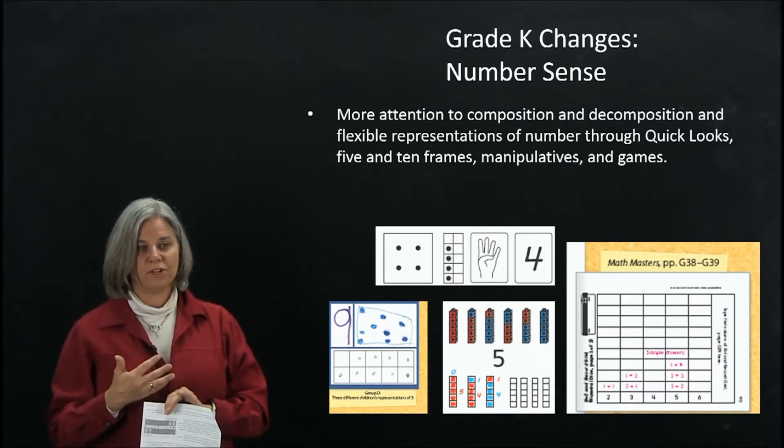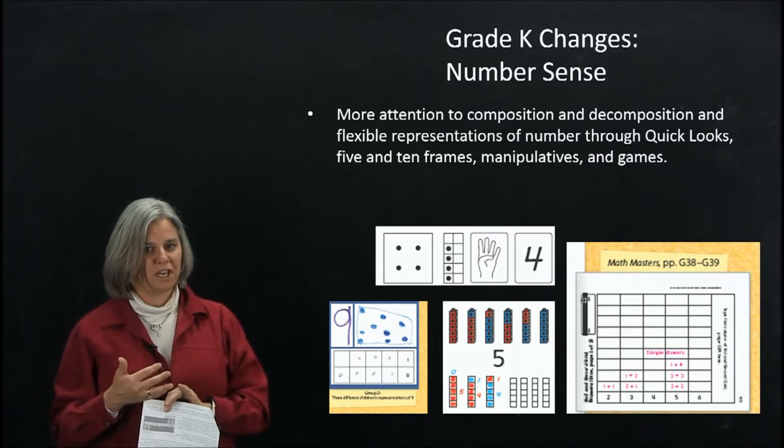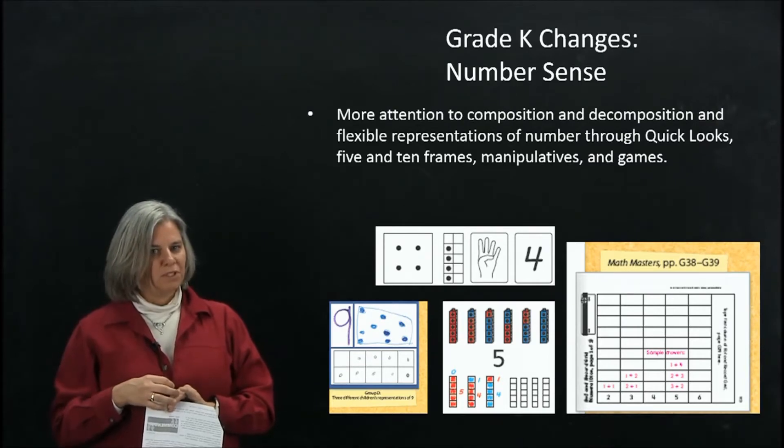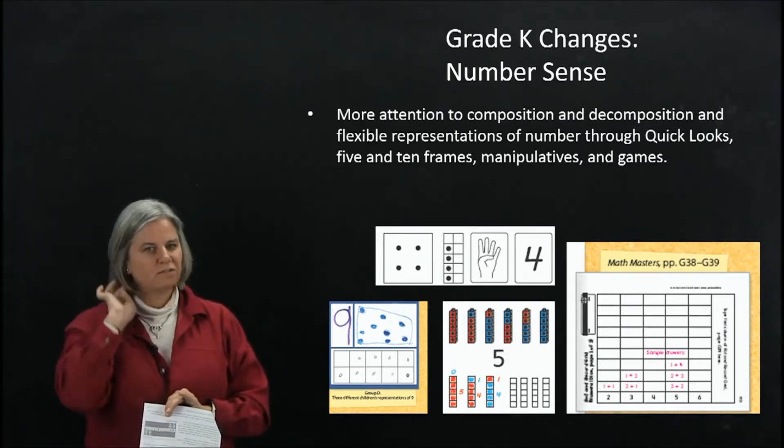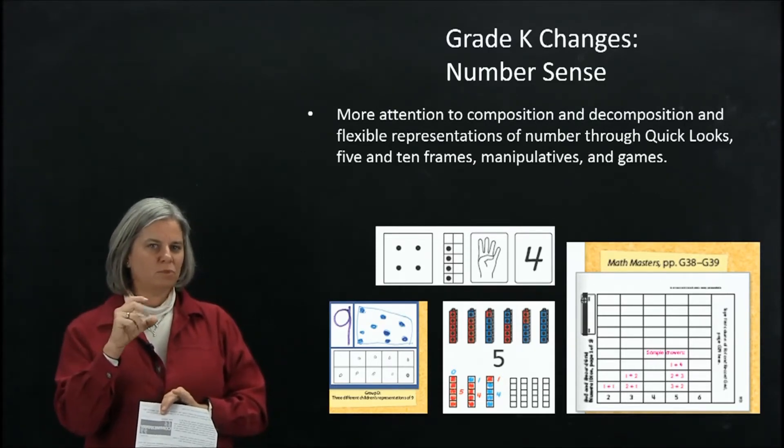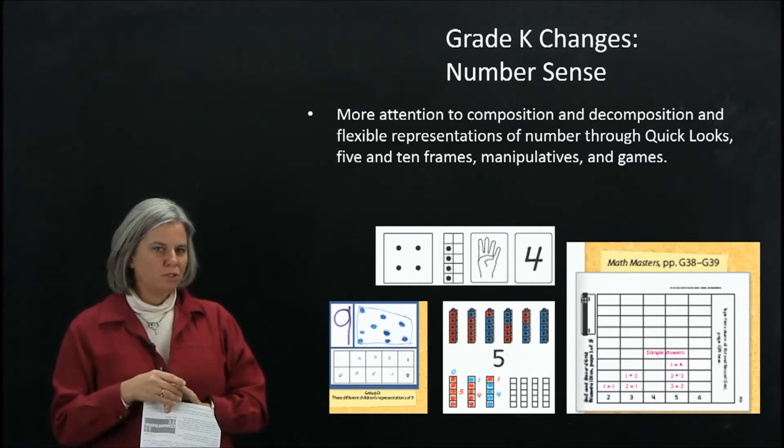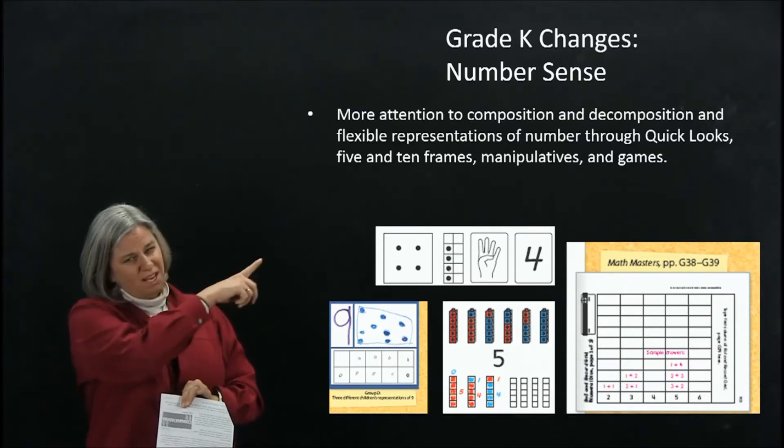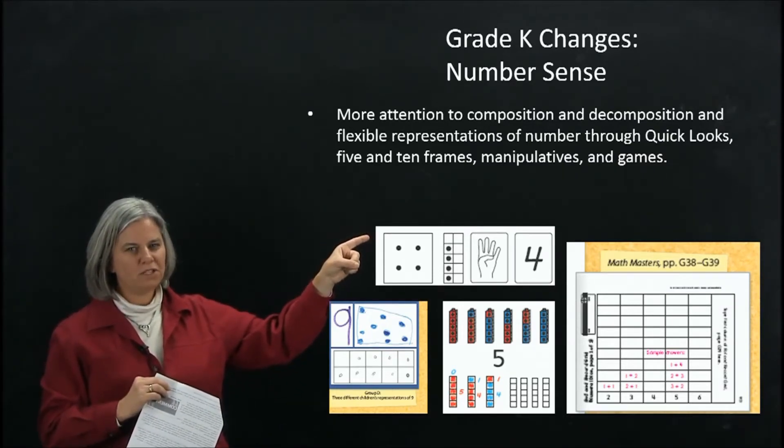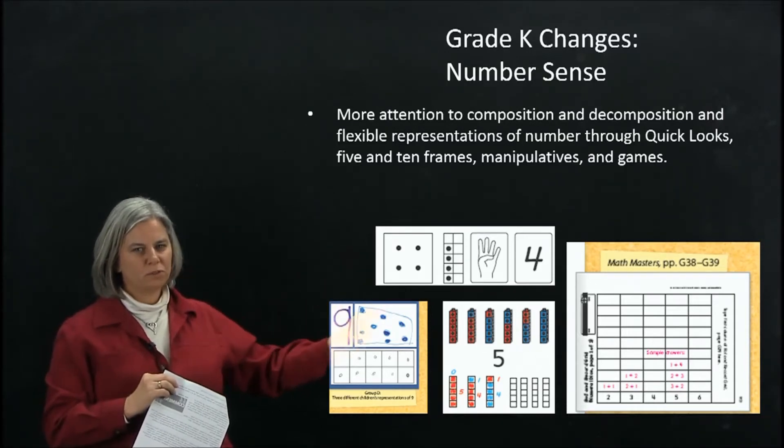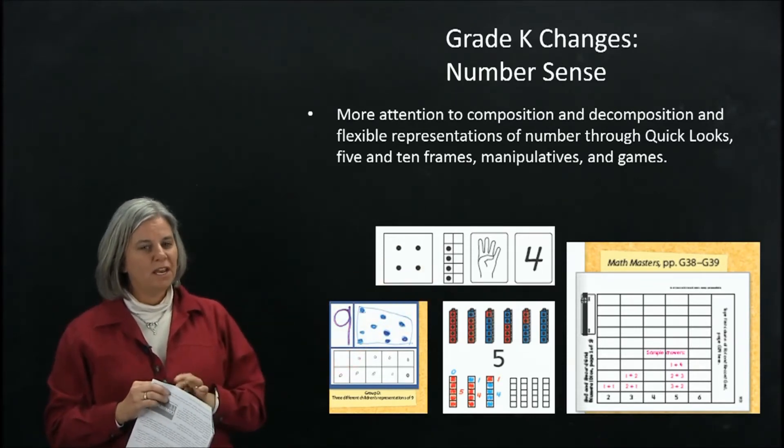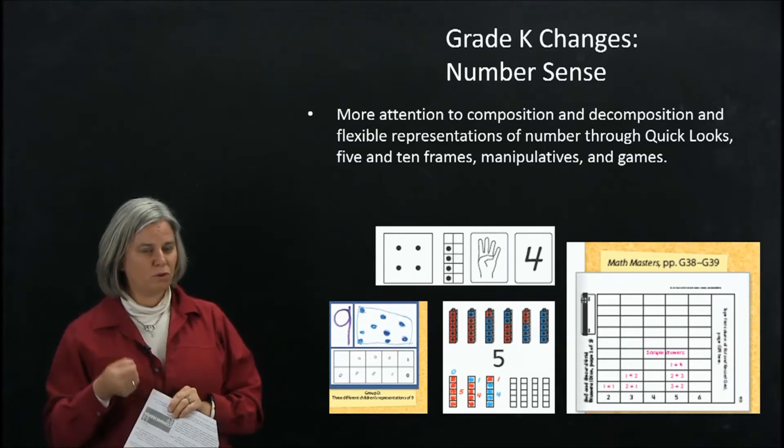Related to counting but still a little bit different is number sense. These fall in the operations and algebraic thinking strands like KOA3 and KOA1. We've done a lot more than we did in previous editions with composition and decomposition of numbers using flexible representations. We've used quick looks, which are quick flashes of dot patterns on ten frames or in other representations. And of course we still use manipulatives and games. This particular slide shows more concrete representations, and gradually we're moving towards more abstract representations of numbers.